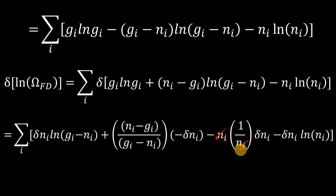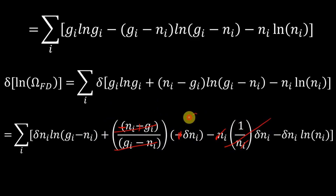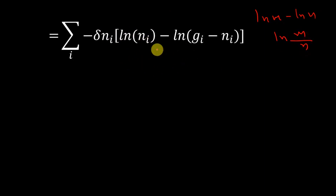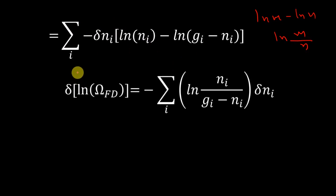After simplification, N_i/N_i cancels, and (N_i - G_i)/(G_i - N_i) with the minus sign becomes +1, so that cancels too. The remaining +dN_i and -dN_i terms also cancel. We factor out -dN_i to keep log(N_i) in the numerator, giving us d(ln Omega_FD) = sum of [-log(N_i/(G_i - N_i))]·dN_i.